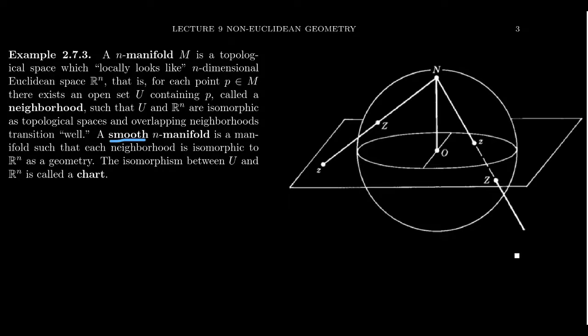Each point needs to have a neighborhood that's locally isomorphic to Rn, and these neighborhoods are going to overlap each other with well-behaved transitions. Furthermore, we can talk about the idea of a smooth manifold. When we talk about a manifold, this isomorphism is an isomorphism of topologies, so U and Rn are isomorphic as a topology. If we require that this isomorphism between U and Rn be an isomorphism of geometry — since Rn is more than just a topology, with all of Euclidean geometry's structure — we call this a smooth manifold. And this isomorphism is called a chart.